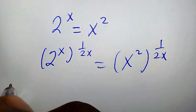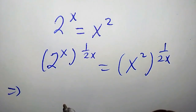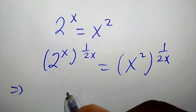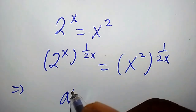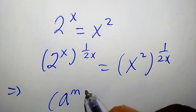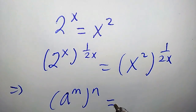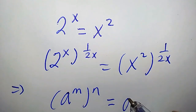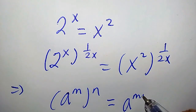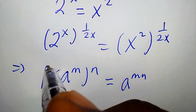This implies we should recall the power rule. It says whenever we have a to the power of m times n, it is simply equal to a to the power of mn. We are going to apply this property to each side.